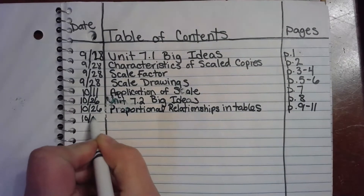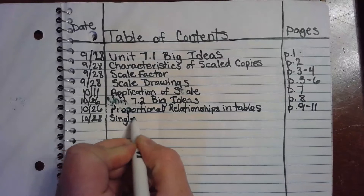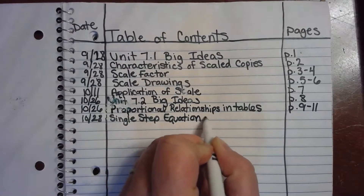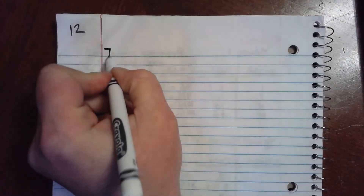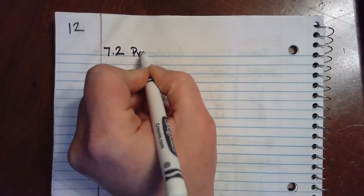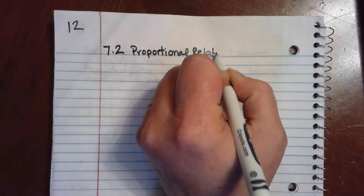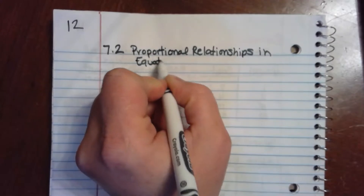All right, let's do that — we're going to do some single step equations. This is just preparing for proportional relationships in equations; we're going to do a little bit of review. We'll start on page 12, and at the top of this page we'll write: 7.2 Proportional Relationships in Equations.